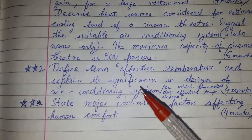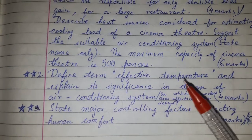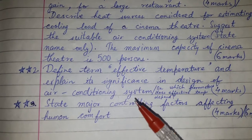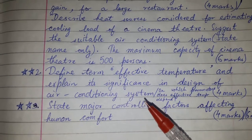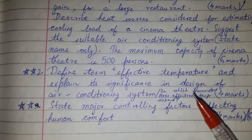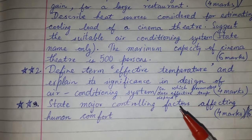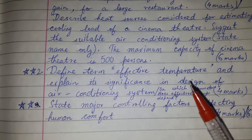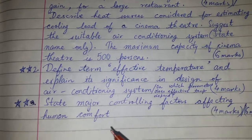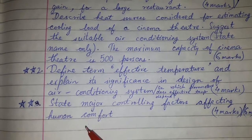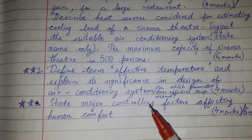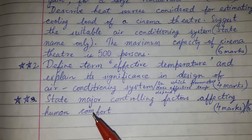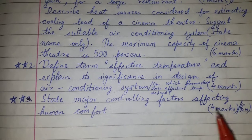Question number two: define the term effective temperature and explain its significance in the design of an air conditioning system, or on which parameters does effective temperature depend. This has come for four marks. The same question can be asked in different ways. Question number three: state the major controlling factors affecting human comfort. This one has been asked for four marks and six marks.